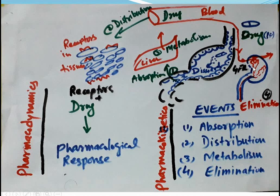From the general circulation, the drug reaches the kidneys and is eliminated through the renal route. Sometimes it enters the hepatic circulation, is secreted in bile, and eliminated via feces. This overall movement of drug — absorption, distribution, metabolism, and elimination — is called pharmacokinetics. Where the drug acts at the tissue and gives a pharmacological response is called pharmacodynamics.